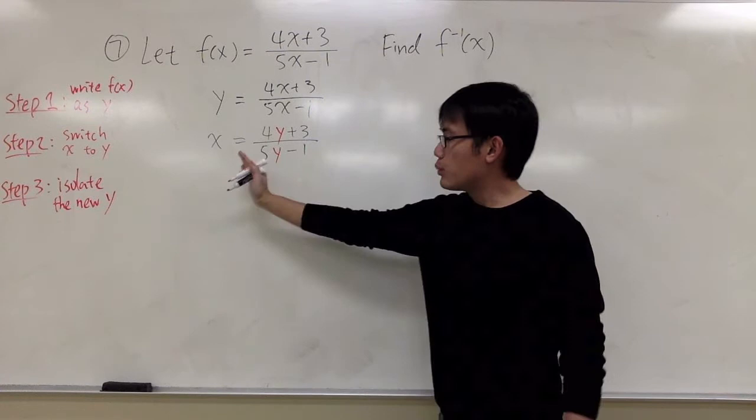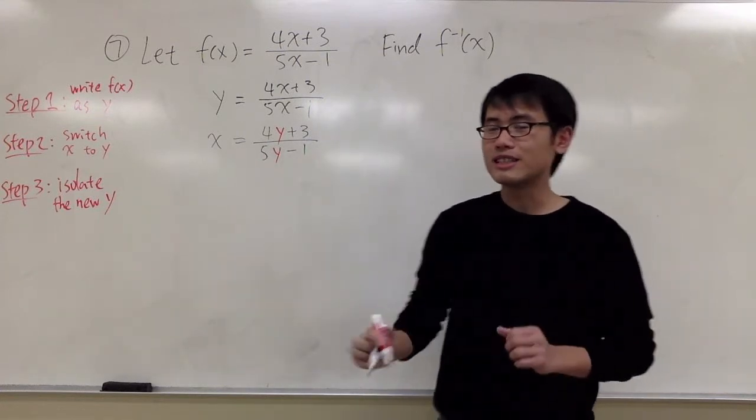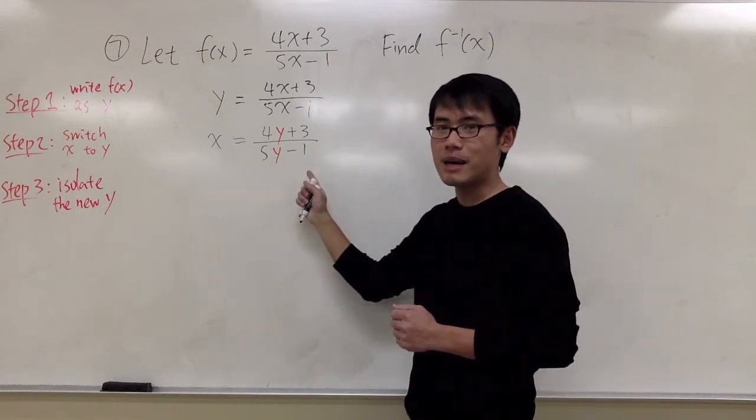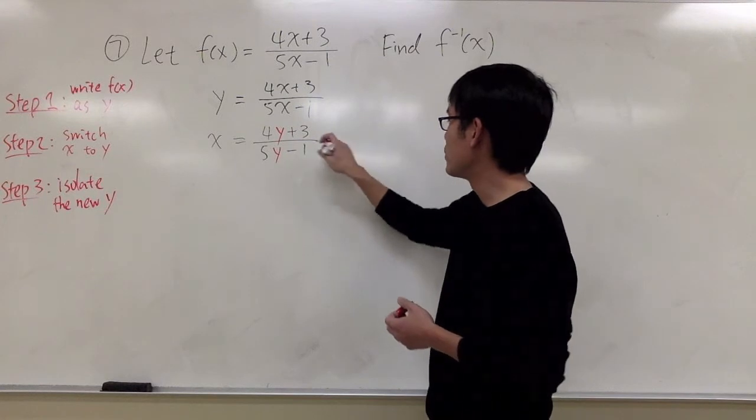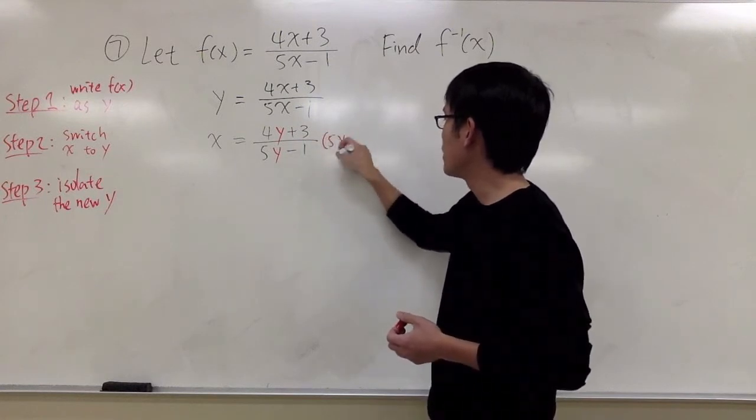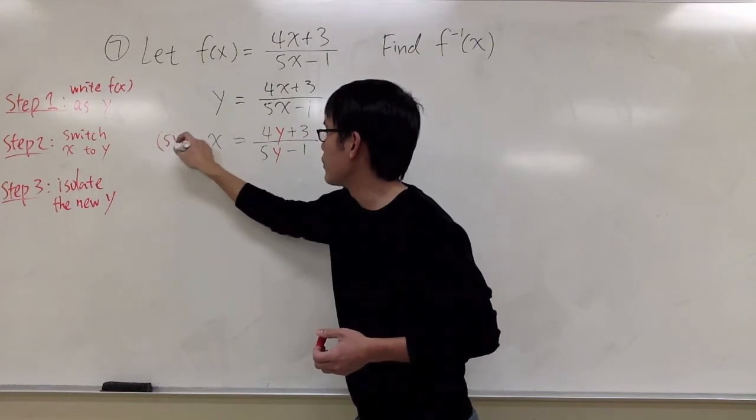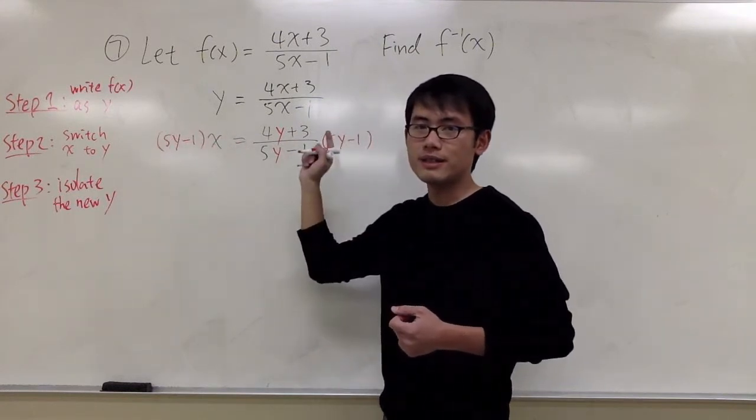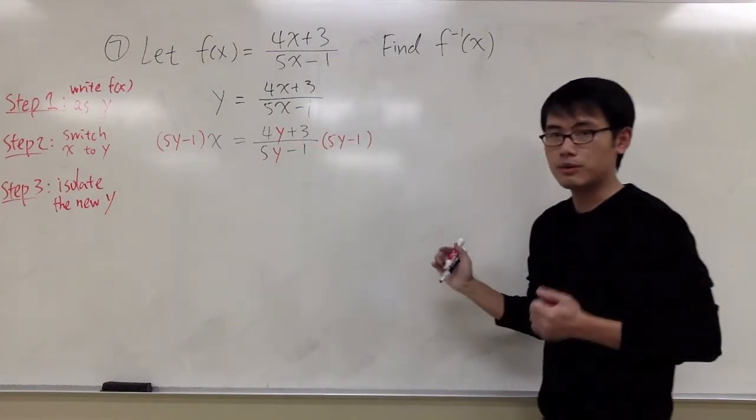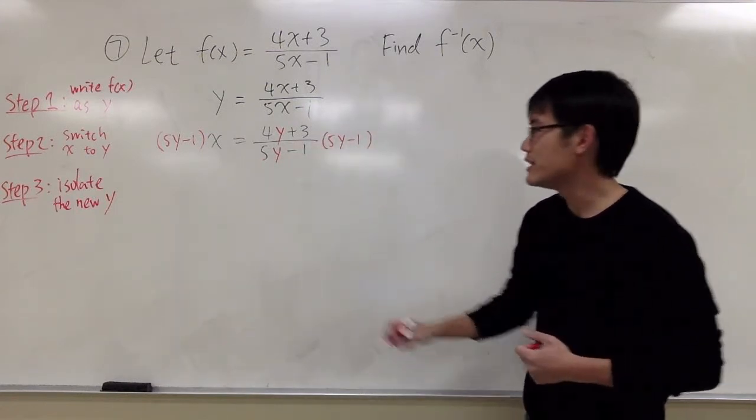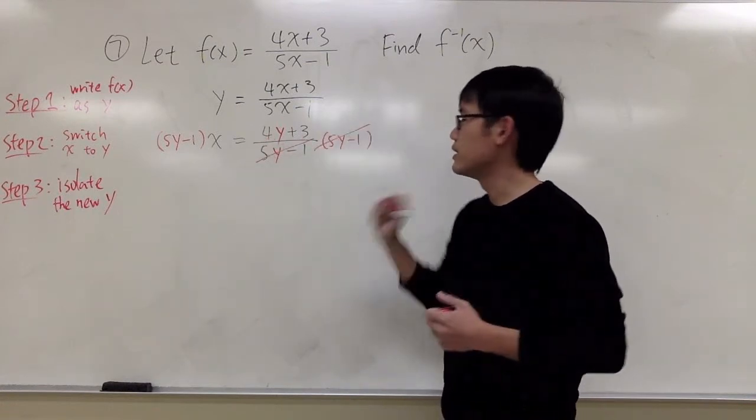So here we have an equation with fractions. Whenever you have an equation with fractions, let's multiply both sides by the lowest common denominator, which is just 5y minus 1. So I will multiply 5y minus 1 here, and perhaps I will put this on this side, 5y minus 1. Doesn't matter if you put it left or right. But the idea, multiply both sides by 5y minus 1, the denominator. And we will see that on this side, the 5y minus 1 cancels out with each other.